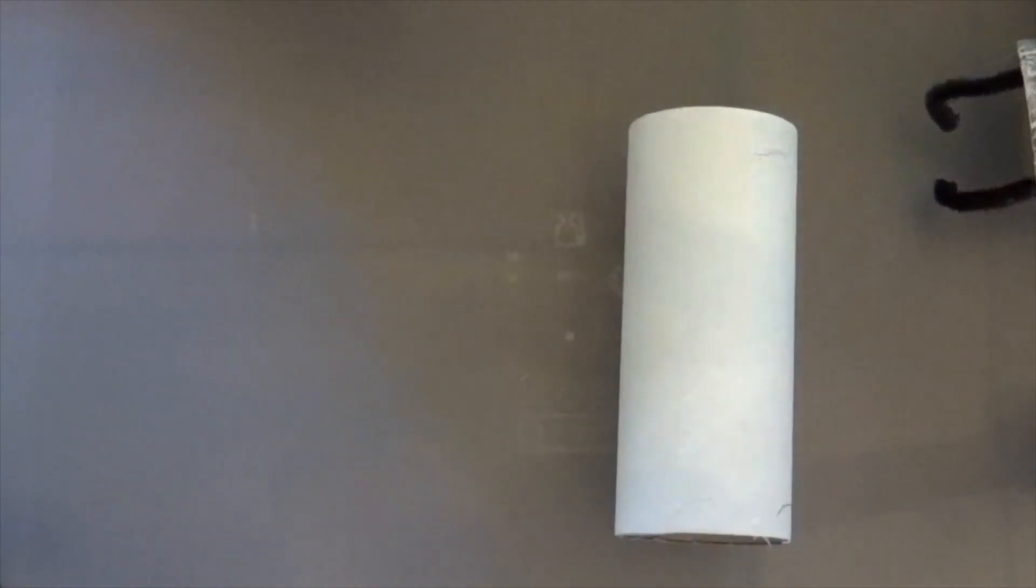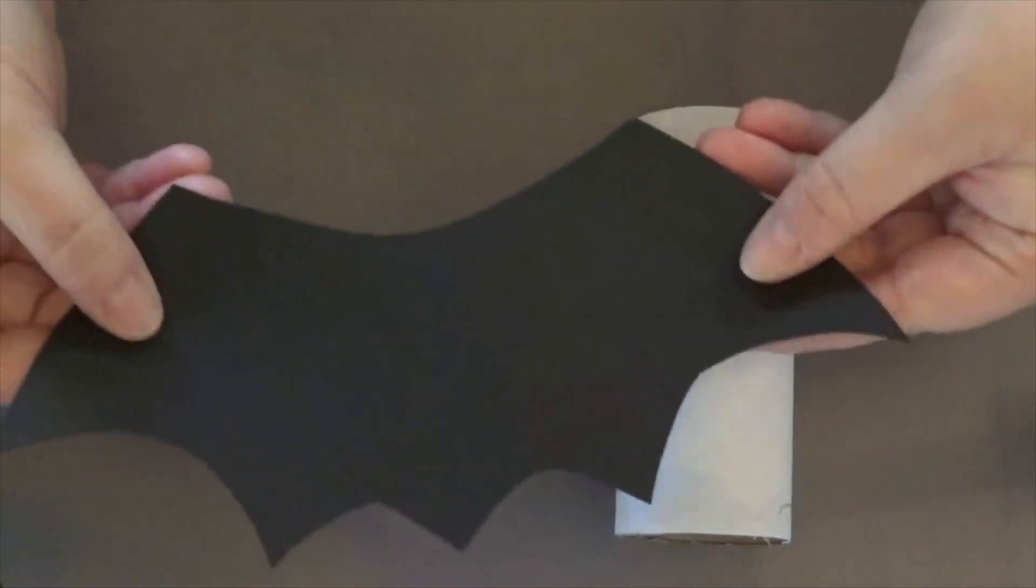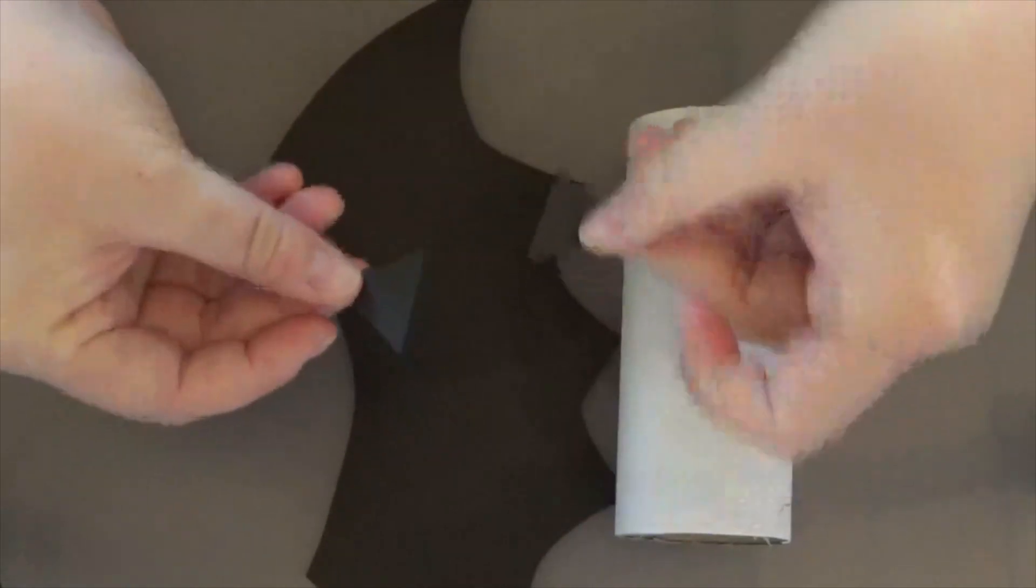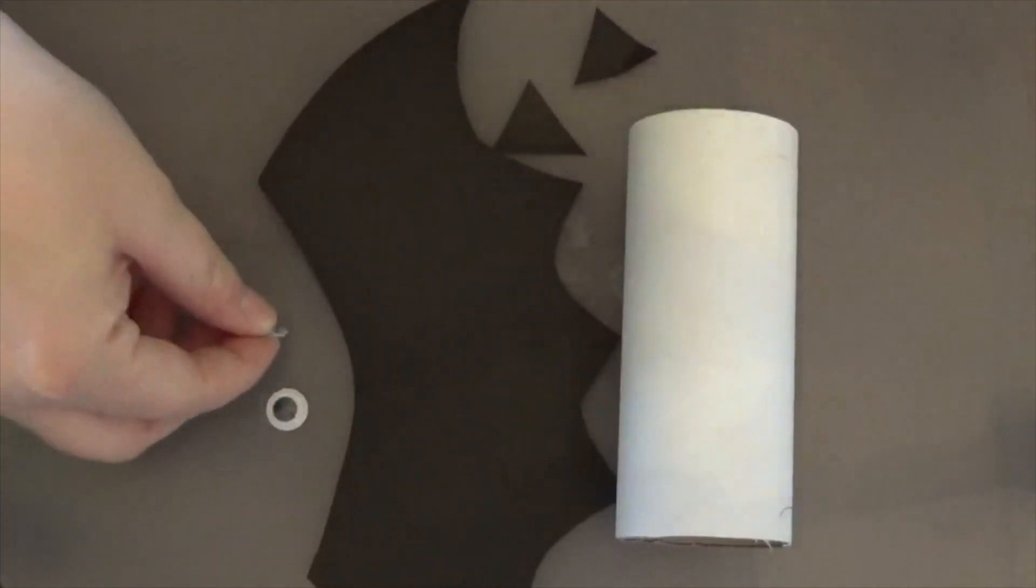You're going to need a toilet paper tube. You're going to need some black paper to cut out some wings and to cut out two little triangles for ears.